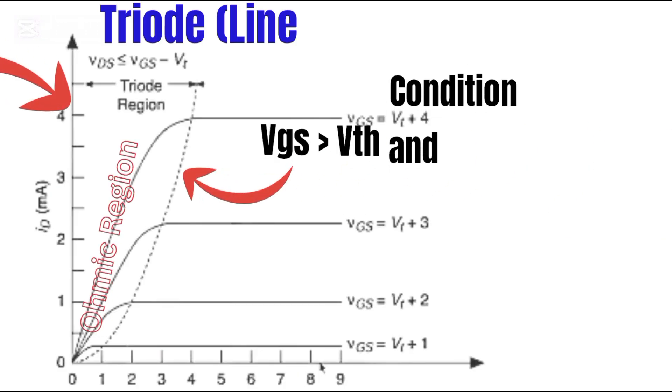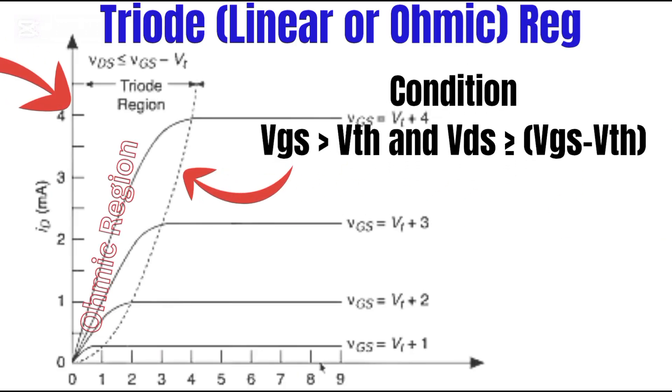Two, linear or triode region. Here, VGS or gate-source voltage is greater than VTH or threshold voltage, and the drain-to-source voltage, VDS, is small. The MOSFET acts like a variable resistor. Current increases almost linearly with VDS.